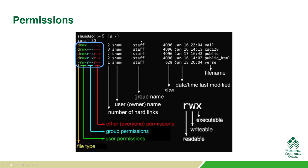The group is specified right here by the group name. The owner name is here — in this case, the owner is Shum and the group is Staff. Now we look at this other one in red, and that is basically everybody else. A lot of times we have files looked at over the internet where we don't know who is looking at them. We may not want them to have execute permissions or write permissions, so that's what we'd be setting up here.